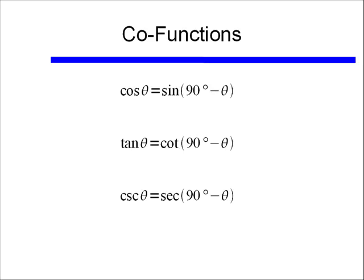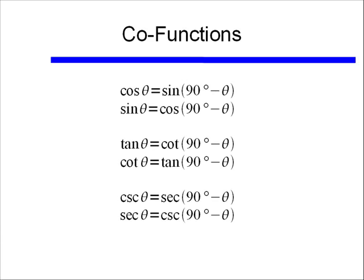We can state this in general form. Sine and cosine are co-functions — that is, complementary functions. Since 90 degrees minus an angle is the complement of the angle, in general: cosine of theta equals sine of 90 degrees minus theta, and likewise for tangent and cotangent, and cosecant and secant. It also goes the other direction: sine of theta equals cosine of 90 degrees minus theta, and likewise for cotangent and tangent, and secant and cosecant.